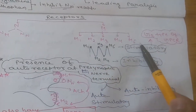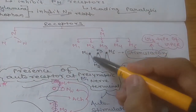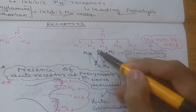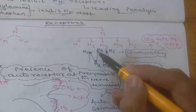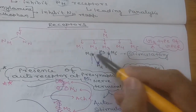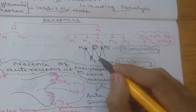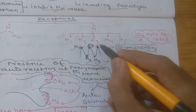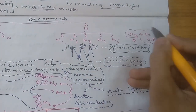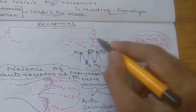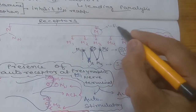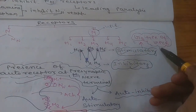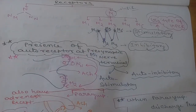Muscarinic receptors include M1 through M5. M1, M3, and M5 are stimulatory and are Gq-type GPCRs. M2 and M4 are inhibitory in nature.